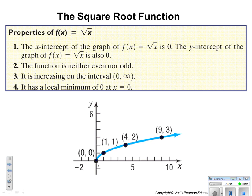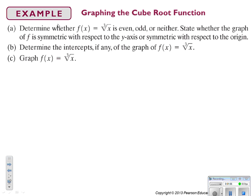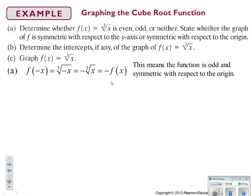You can't input negative values into the square root function. Now for the cubed root function — graphing f(x) = ∛x — we determine whether it's even or odd, whether it's symmetric, and find the intercepts. To check even or odd, we plug in negative x. The cubed root of any negative value equals the negative of the cubed root of that value, so f(−x) = −f(x), which means the function is odd and has symmetry with respect to the origin.